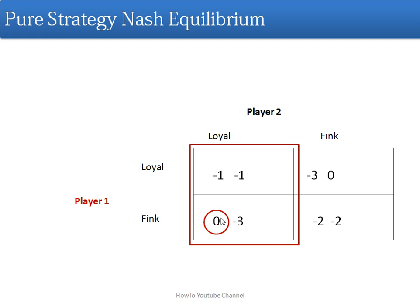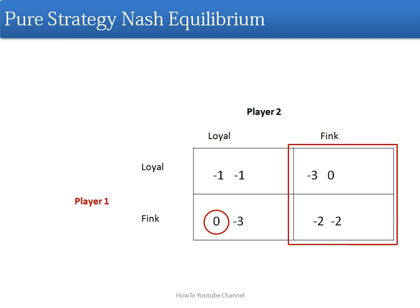Now second, if player 2 goes for fink — if player 2 is playing fink strategy, again we need to see which strategy for player 1 will be good. We need to compare their payoffs. For fink it's minus 2, for loyal it's minus 3. So minus 2 is greater than minus 3, so we will circle this value as well. So for player 1 we are done.